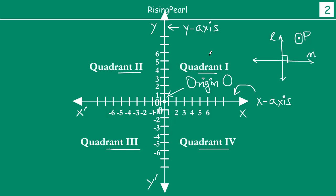And how do we tell which is which quadrant? From OX, from here we go in the anti-clockwise direction and we get one by one all the quadrants. So we start off from here and go in the anti-clockwise direction: first we get Quadrant one, then Quadrant two, then Quadrant three, and finally Quadrant four.